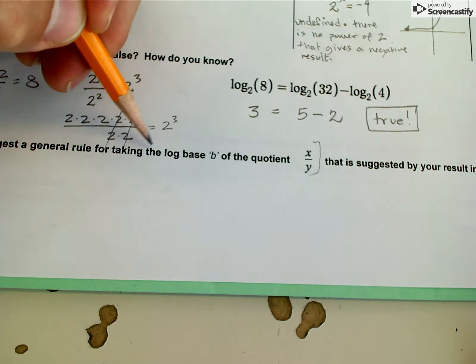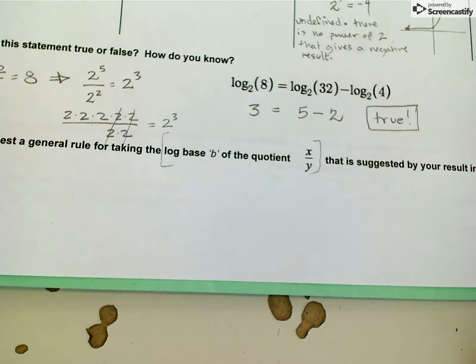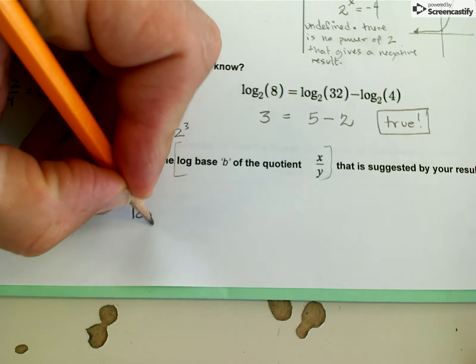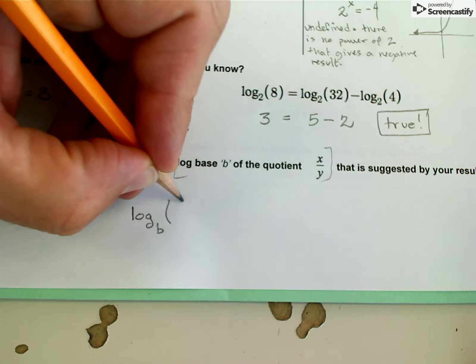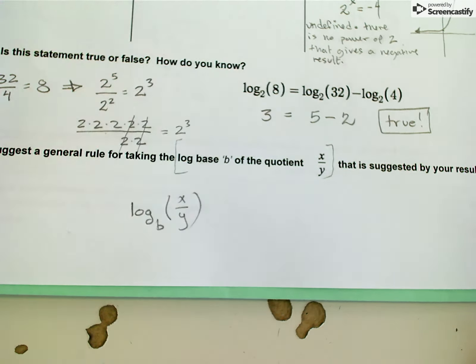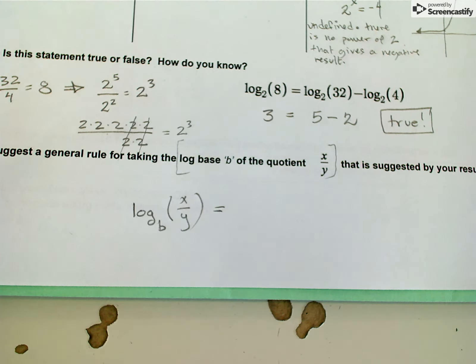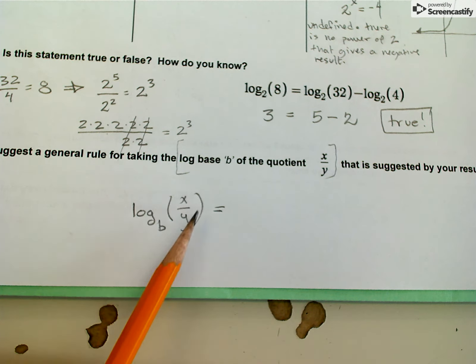First of all, it's important to interpret this information and write that as an actual mathematical expression: log base b of x divided by y. What does that equal? I want to write something on the right hand side that expands this relationship.